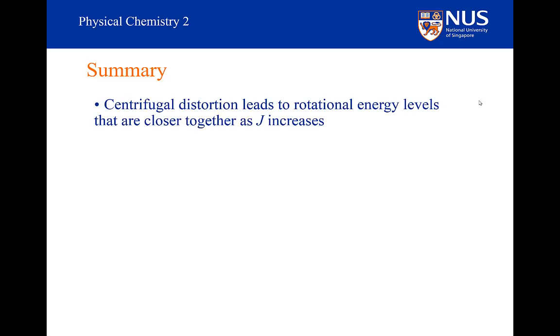In summary, centrifugal distortion leads to rotational energy levels that are closer together as J increases. Another way we can look at that, qualitatively, is similar behavior to the particle in a box. The energy levels of the particle in the box get closer together as you increase the size of the box.